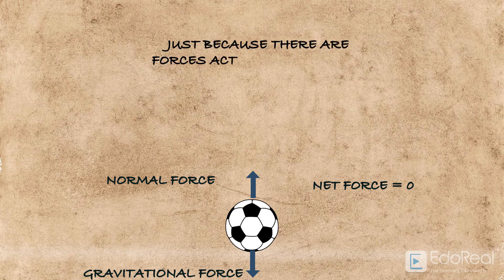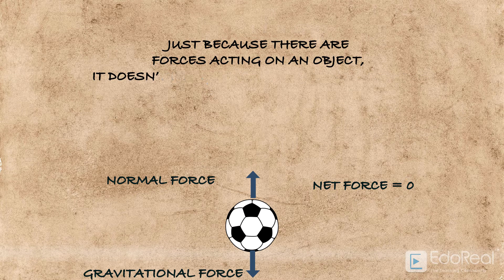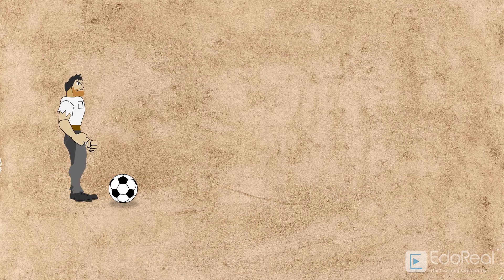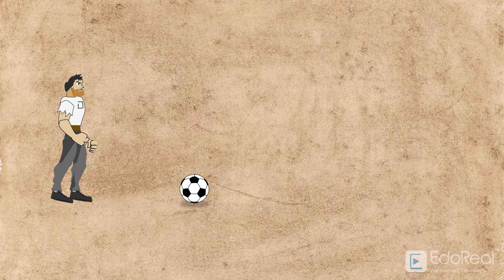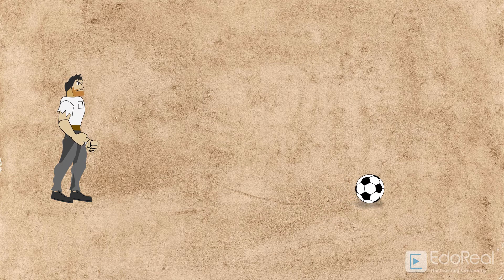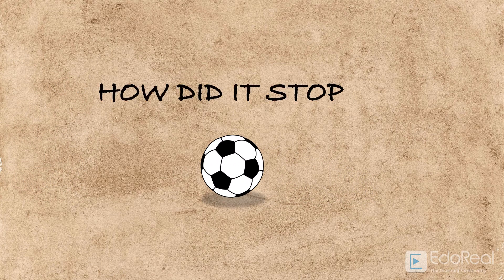And just because there are forces acting on an object, it doesn't imply that the object is in motion. There should be some net force for the object to move. If a person kicks the ball, the position of the ball changes due to the applied force acting on it. After covering some distance, the ball stops — but if there is no force from the other side, how did it stop?